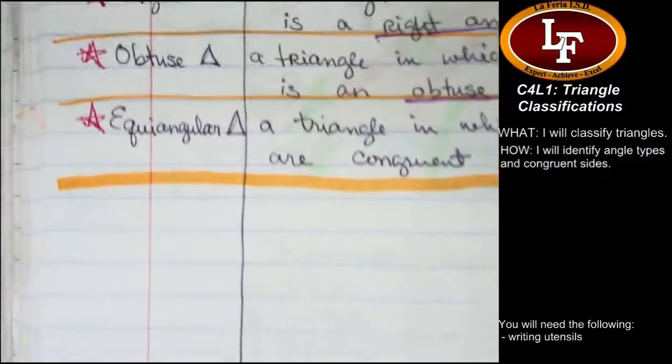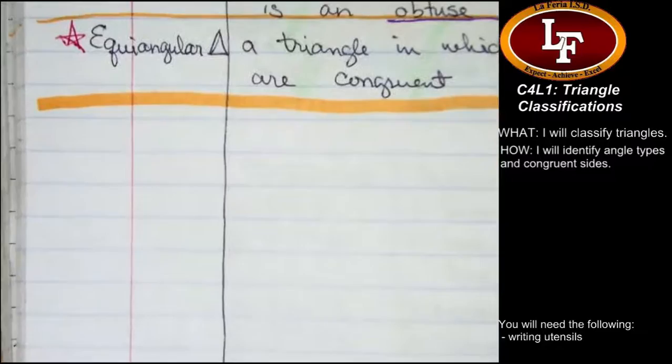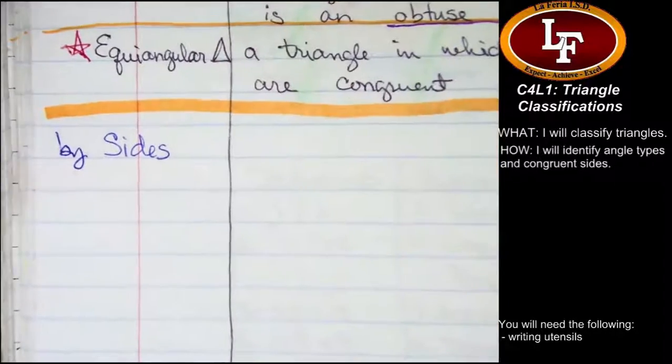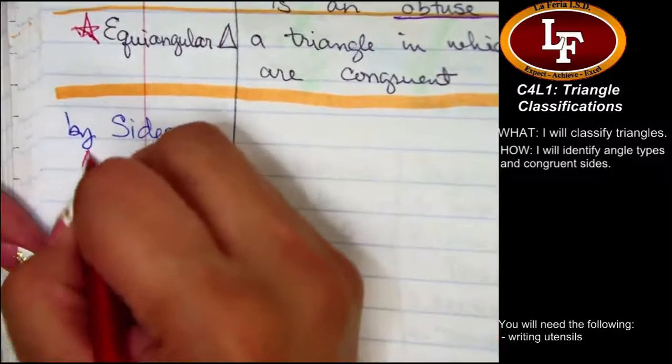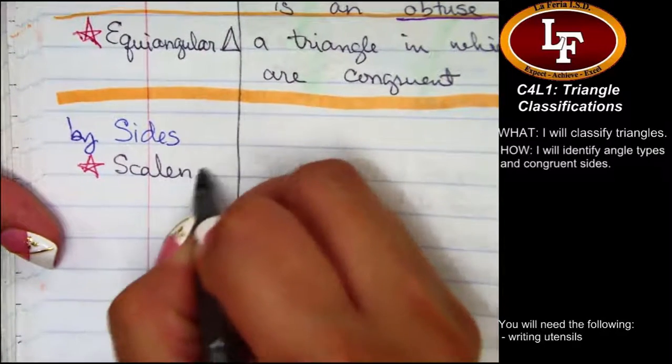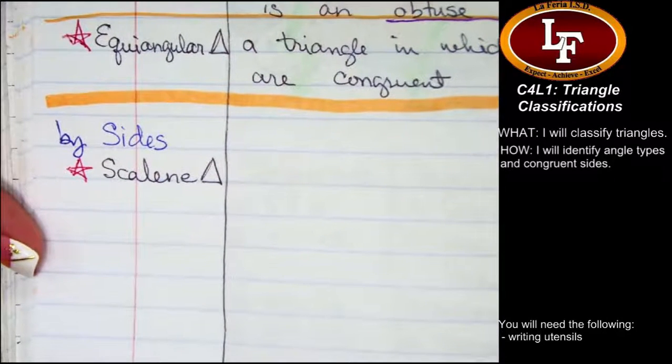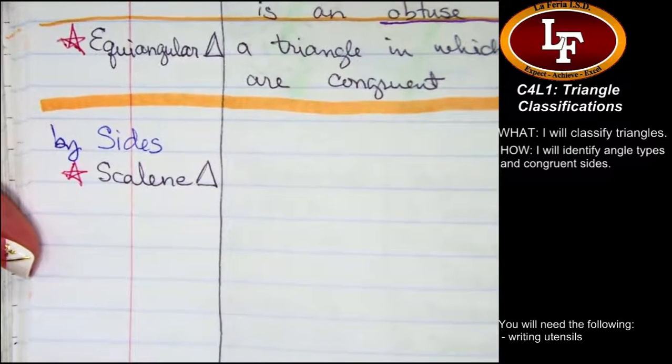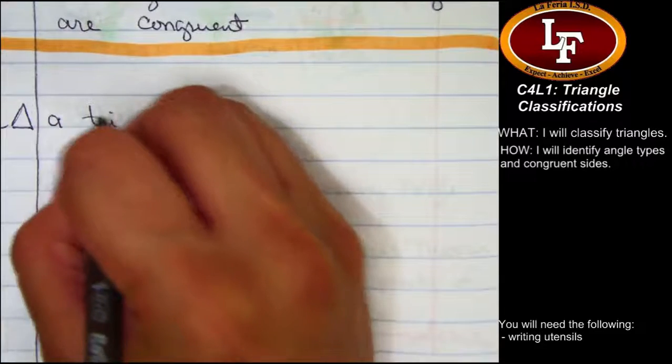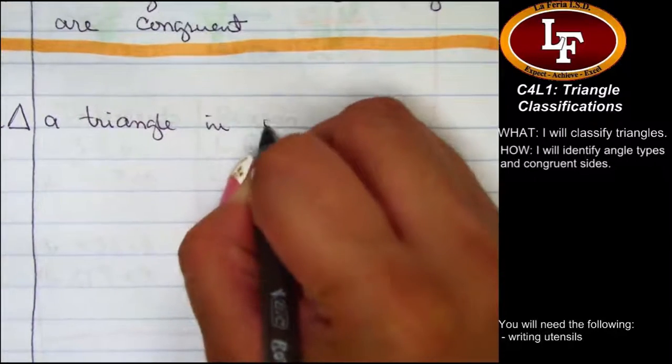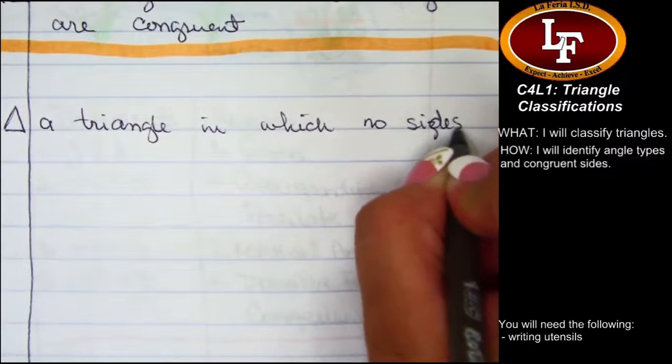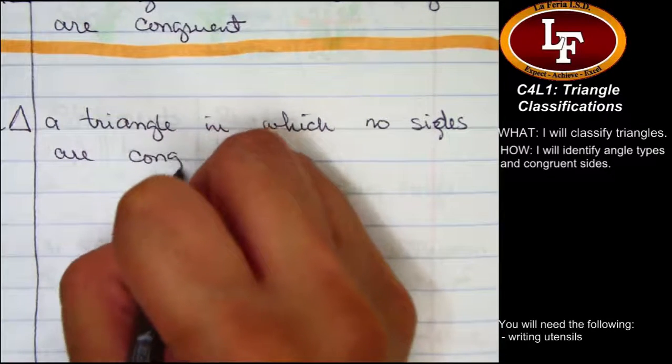Our next section of notes is going to be over classifications by sides. Our first triangle classification is the scalene triangle that is pronounced scalene. Mom, what's a scalene angle, triangle, whatever? A scalene triangle is a triangle in which no sides are congruent to each other. Oh.